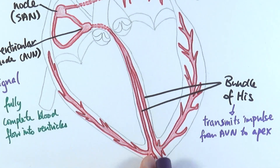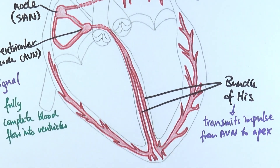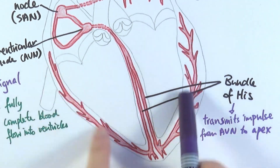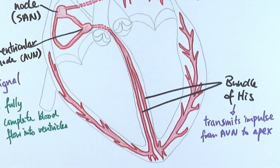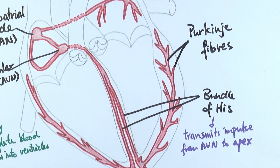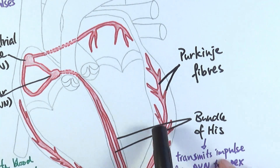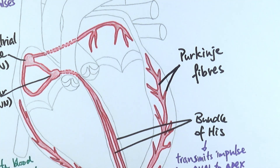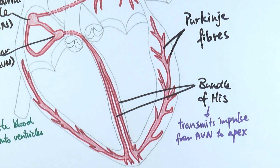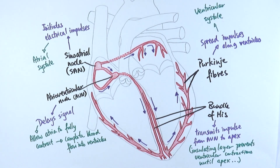From the apex, the bundle of His branches off into multiple fibers along the sides of the ventricular walls. These fibers are called the Purkinje fibers, which spread the impulses along the ventricles, stimulating the ventricular walls to contract. This is what we call ventricular systole — the contraction of the ventricles starting from the bottom up to push blood out of the heart.